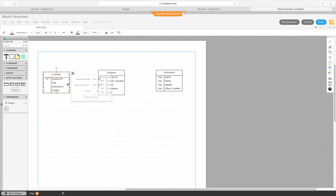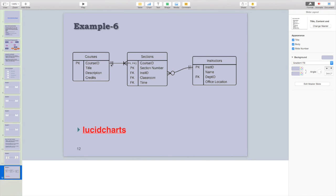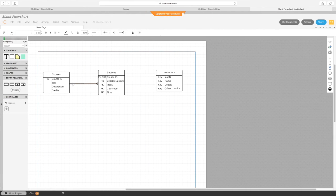To add the relationships, I simply draw a line here between two entities. We need one and only one and one and many here. For one and only one, if you click on this line, to the left you have various options. You can choose one and only one.